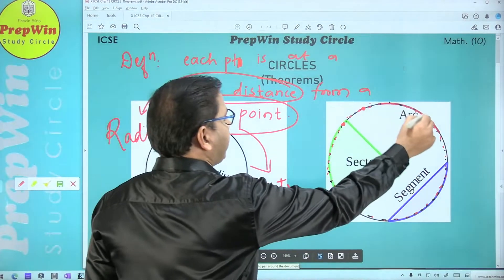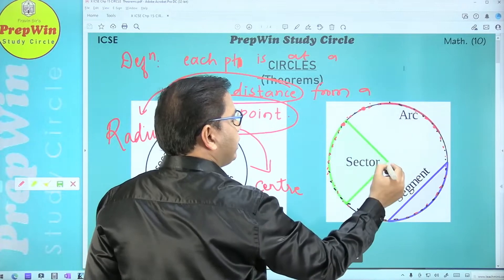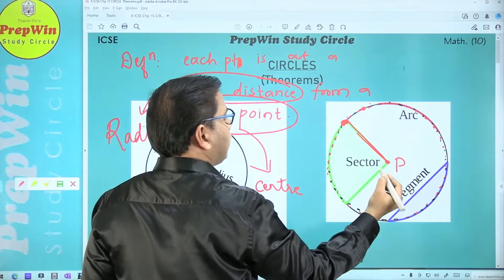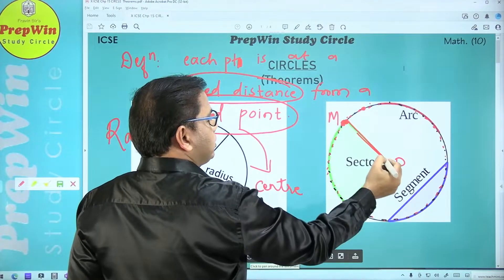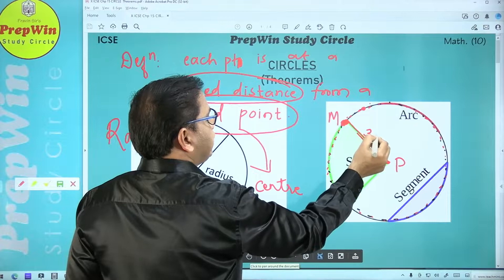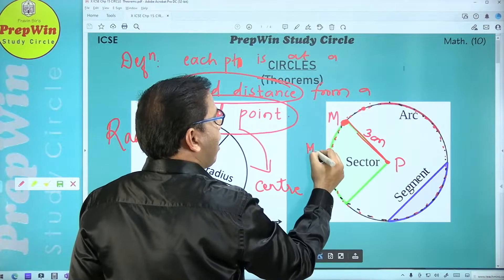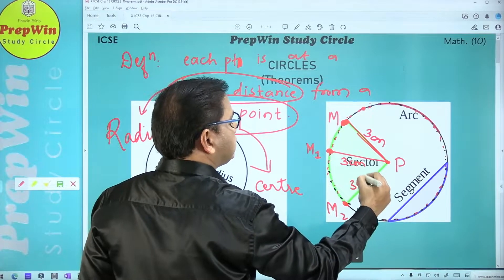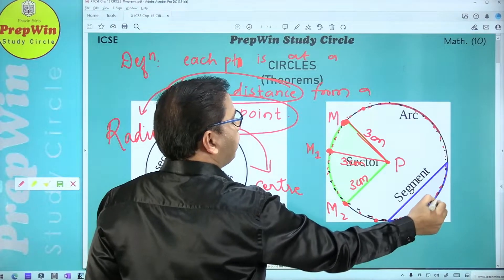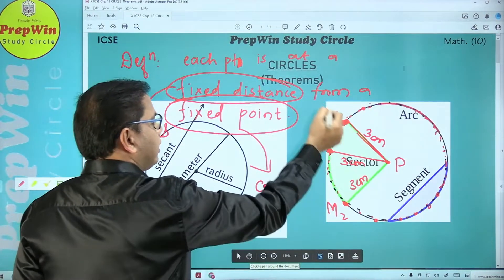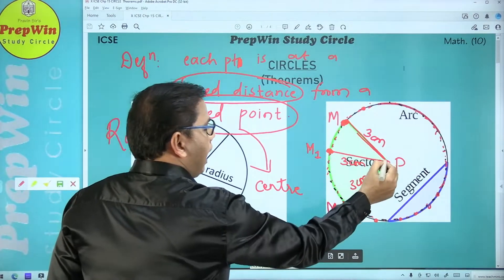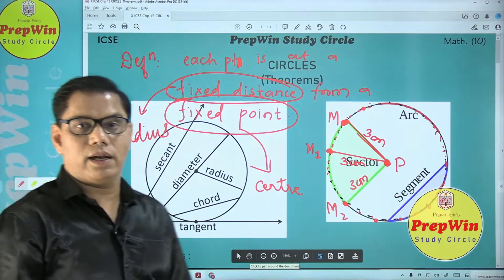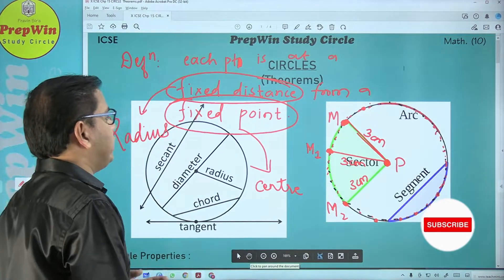So the definition of a circle: a circle is a set of infinite number of points in which each and every point is at a fixed distance from a fixed point. For example, if the center is P and I take point M at a distance of 3 centimeters from P, then point M1 is also at 3 centimeters from P, and point M2 is also at 3 centimeters from P. This rule applies to each and every point on the circle. This fixed distance is called the radius and the fixed point is called the center.